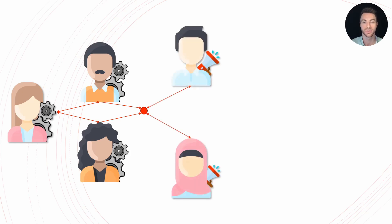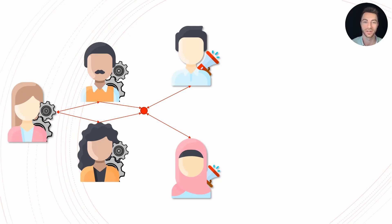Once the engineering data is done, it can be taken directly from the platform and given to Ria and Anisa. Ria creates the 3DEXPERIENCE twin, and then Anisa is able to use that twin easily from the 3DEXPERIENCE platform and incorporate it into the marketing content she is creating.